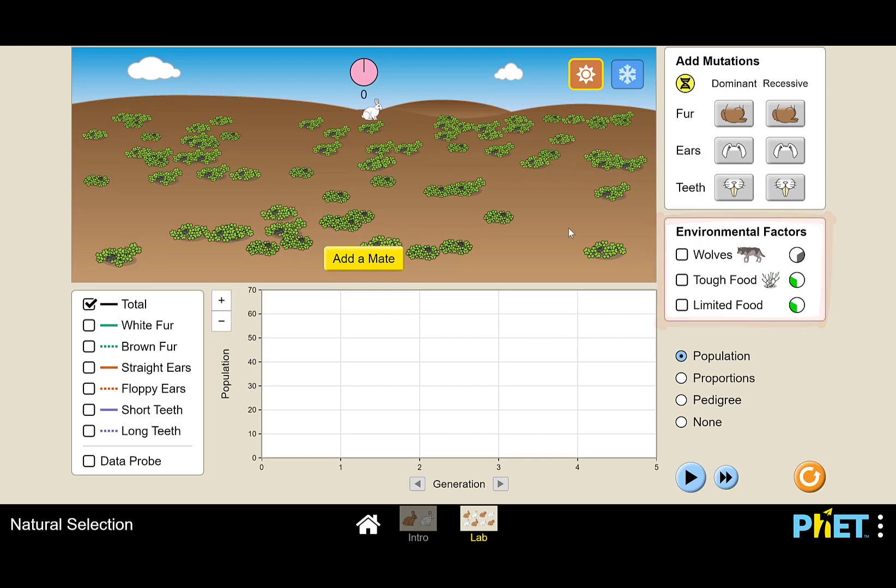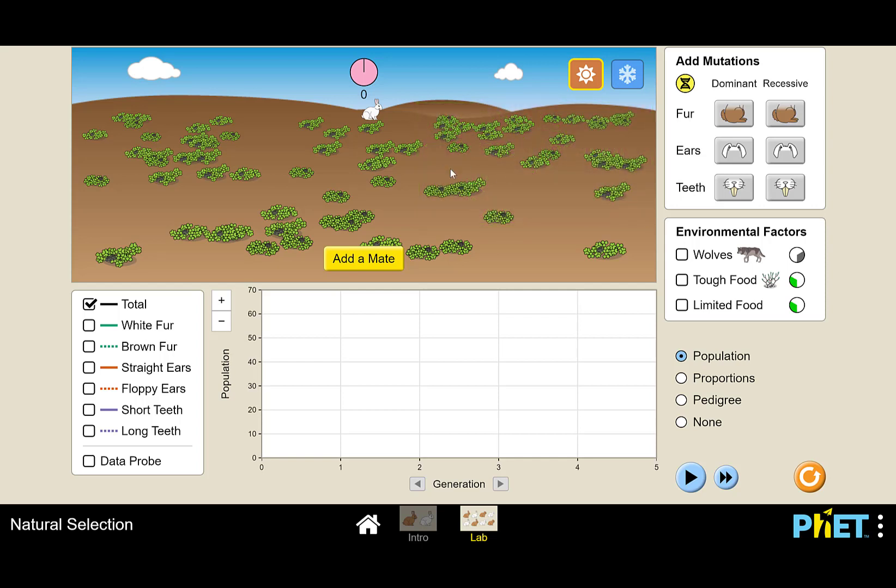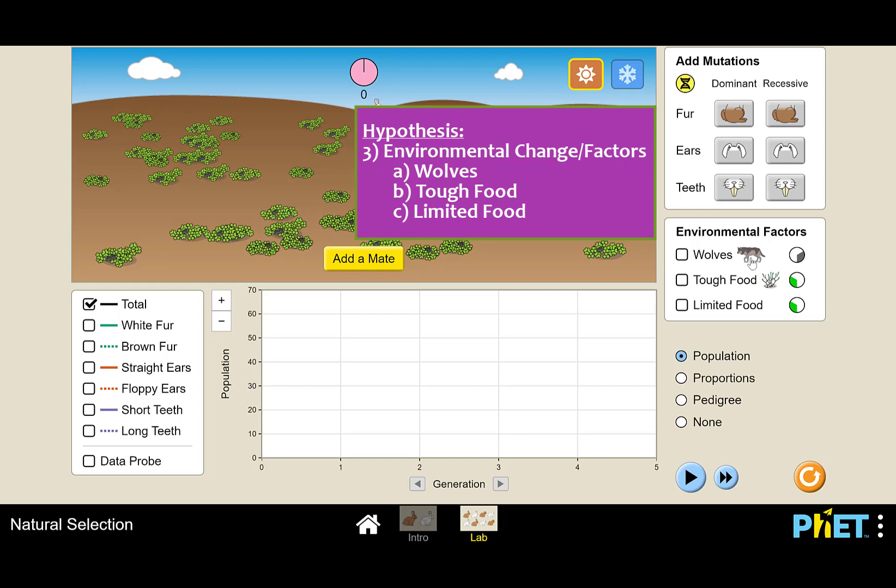Before you begin the simulation, you will need to write your hypothesis. And your hypothesis will include the location of the experiment, either the Arctic or the equator. And then you must designate the trait of the rabbit that you are testing to determine if it is an adaptation, if there is a change in the environment, either the introduction of wolves, difficult food, or limited supply of food.